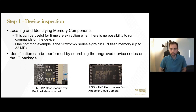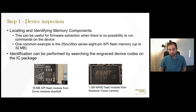One common example is the 25xx or 26xx series 8-pin SPI flash memory holding up to 32 megabytes. Identification can be performed by searching the engraved device codes on the IC package. On the left is a 16 megabyte SPI flash module from a wireless doorbell, and on the right, a 1 gigabyte NAND flash module from the Xtremer cloud camera. Both of these can be researched by the engraved device code on the IC package.